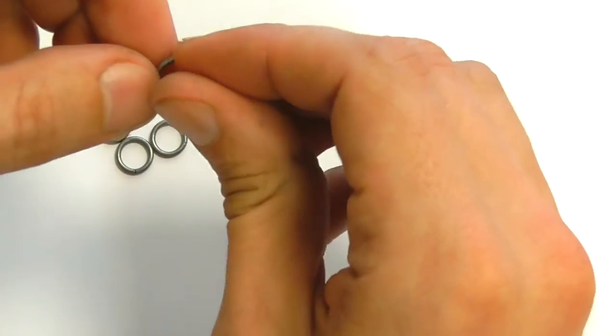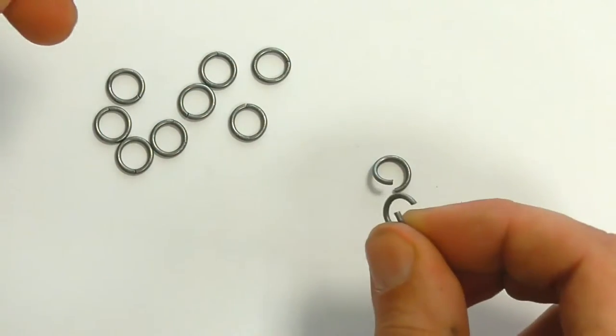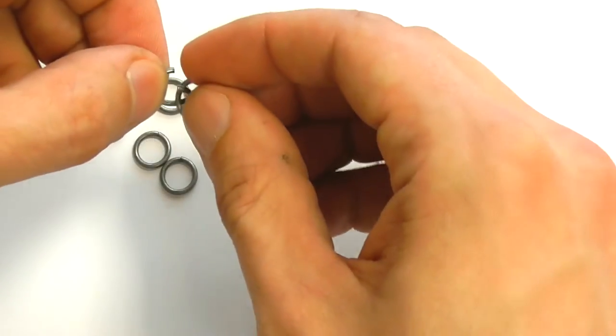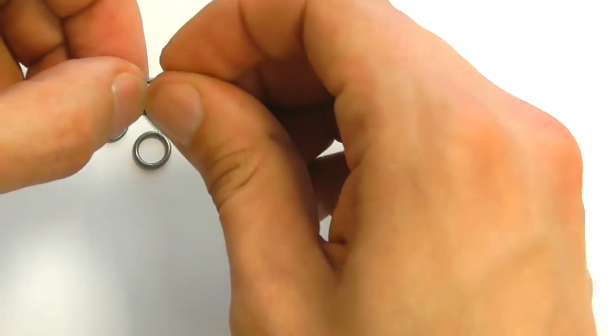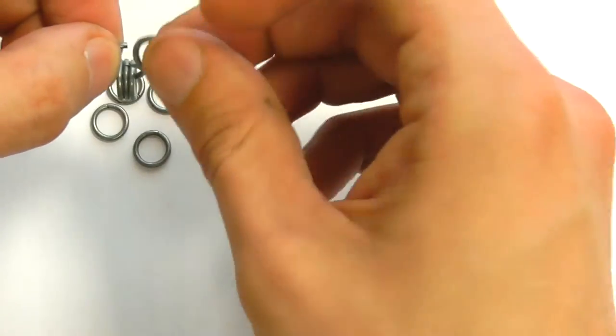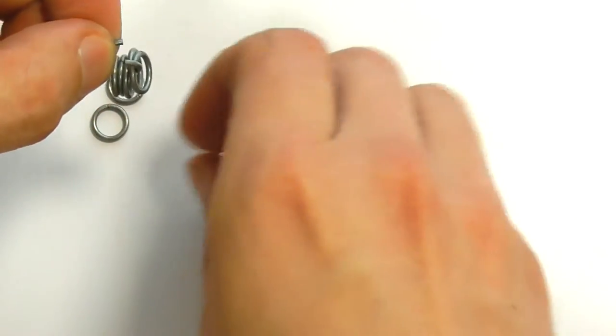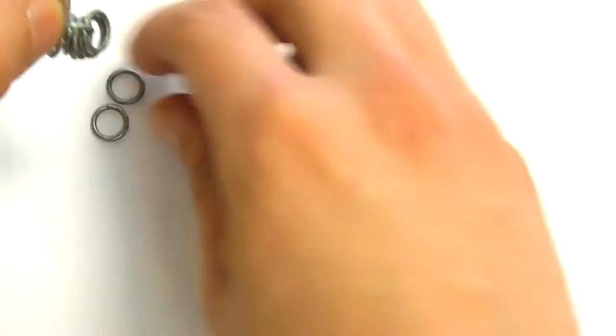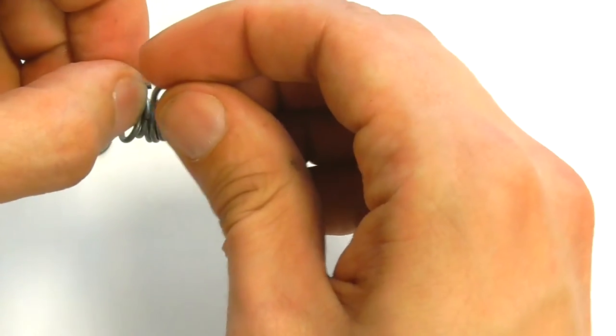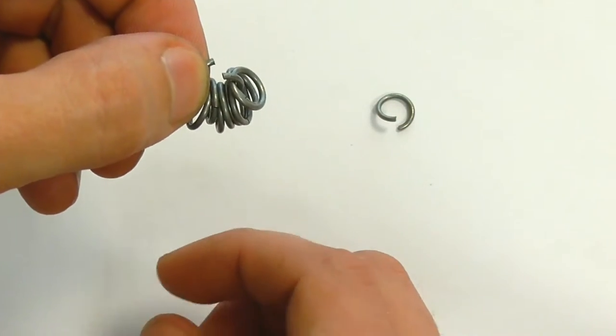Let's start with a basic element. We will need 8 closed rings and 2 open rings. It's a basic operation, but I will show it, cause I want to show you everything from the A to Z. Like that. Now let's close this ring.